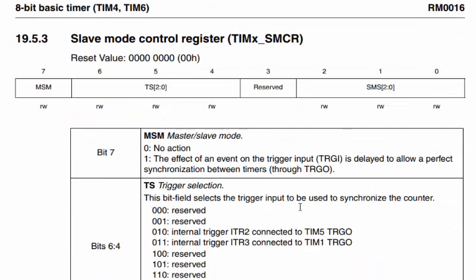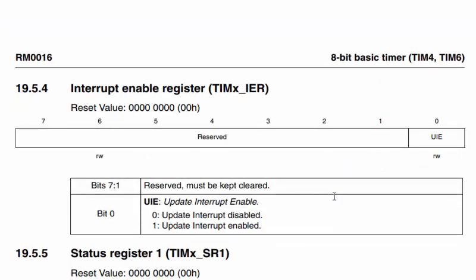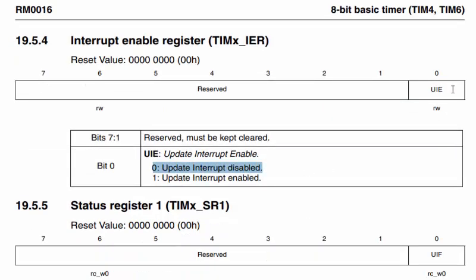The CR2 register is not available in Timer 4 — it is available in Timer 2. The slave mode register is not used here, so we skip it. The interrupt enable register has only one meaningful bit (bit 0): set to 0 it disables the interrupt, set to 1 it enables it. Since we are not using interrupts in this tutorial, this bit will remain 0.